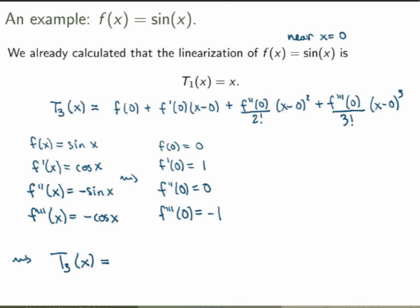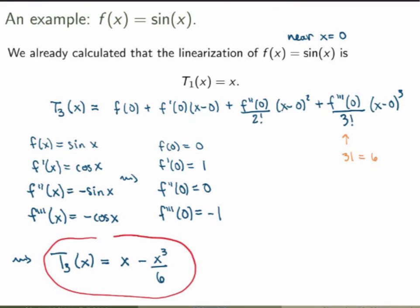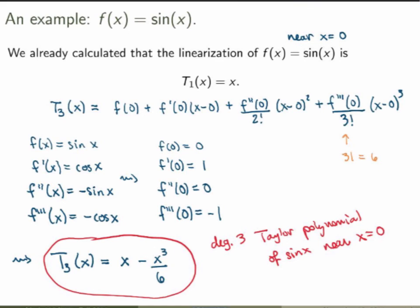Substituting all of that into the expression for the Taylor polynomial: the first term is zero, the second term becomes just x, the third term is zero, and the fourth term becomes minus x cubed over 3 factorial, which is minus x cubed over 6. So t3 of x equals x minus x cubed over 6. This is the degree 3 Taylor polynomial of sine of x near x equals zero. The first term gives the linear approximation, while the full expression gives a better cubic approximation.